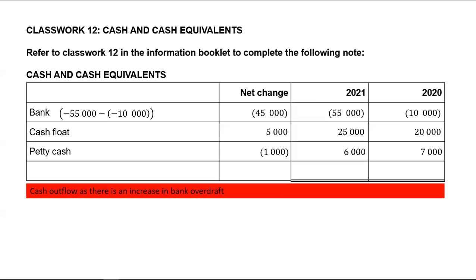The reduction in petty cash will result in a cash outflow of 1,000. To get our net change in cash and cash equivalents for 2020, we take negative 10,000, add 20,000, add 7,000 — you will get positive 17,000. For 2021, you put negative 55,000 plus 25,000 plus 6,000 into your calculator, and that will give you negative 24,000.